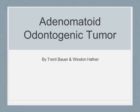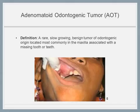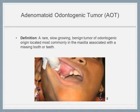Adenomatoid Odontogenic Tumor, or AOT, is a rare, slow-growing, benign tumor of odontogenic origin located in either the maxilla or the mandible, more commonly in the maxilla. The tumor is comprised of an overgrowth of odontogenic epithelium encased in connective tissue, thereby causing expansion of the bone.